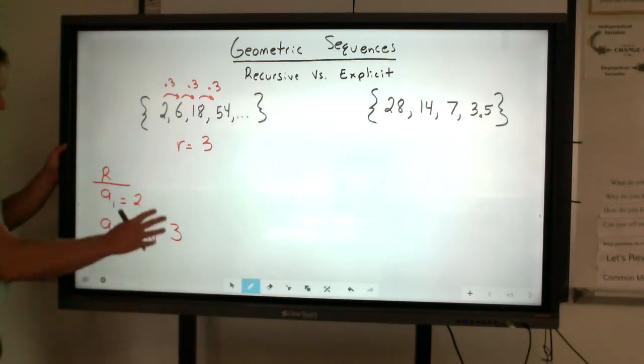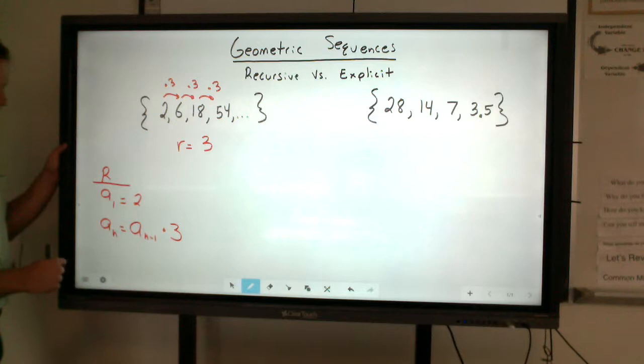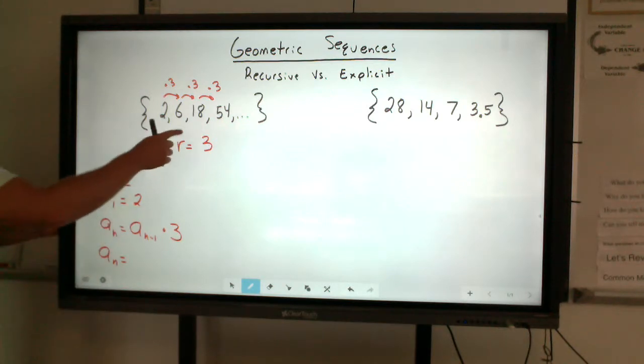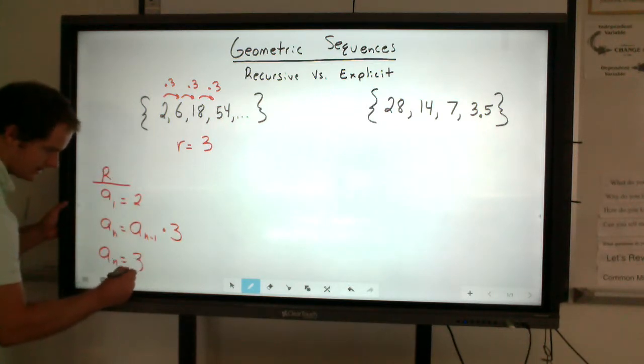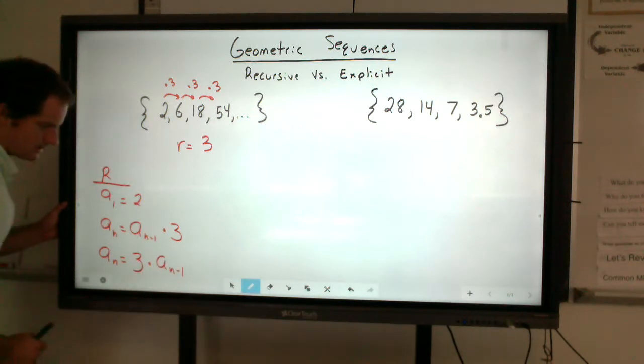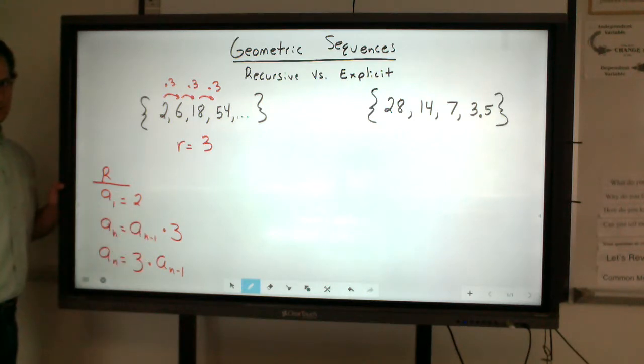So if I ask you for recursive, this is what I'm looking for. I'll also accept this. Some teachers actually prefer to write it this way, where they say any nth term is that common ratio, so in this case it's 3, multiplied by that previous quantity, or that previous term. So either one of these is fine for writing it recursively.